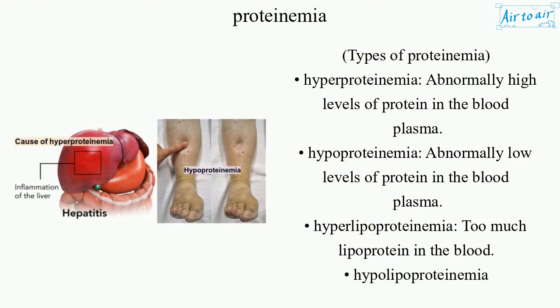Types of proteinemia: hyperproteinemia — abnormally high levels of protein in the blood plasma; and hypoproteinemia — abnormally low levels of protein in the blood plasma.